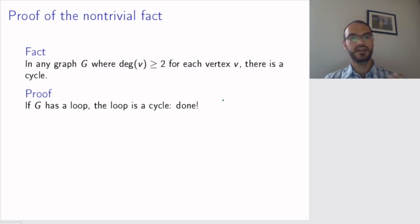So, why is that? If G has a loop, then the loop itself is a cycle, and we're done. There exists a cycle.